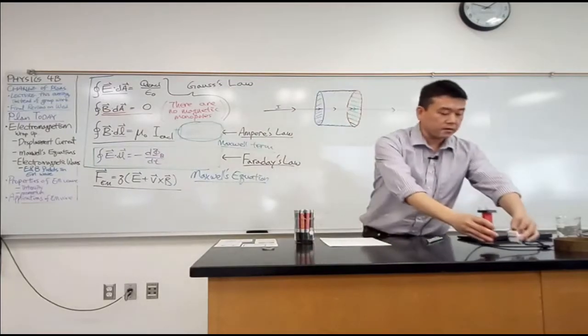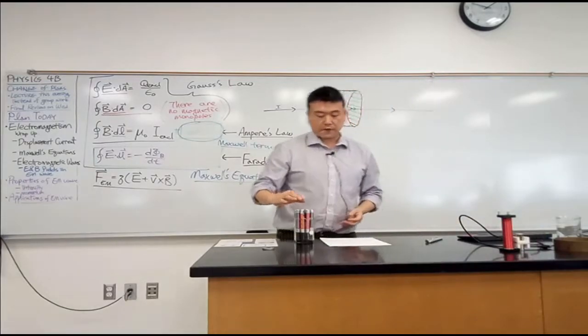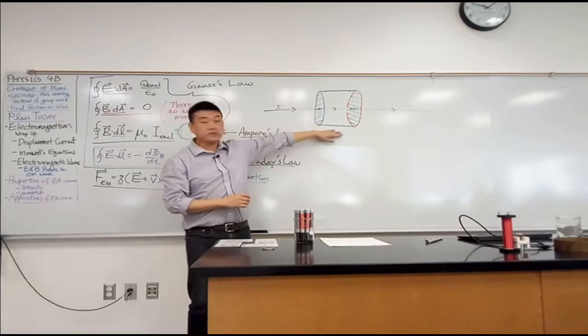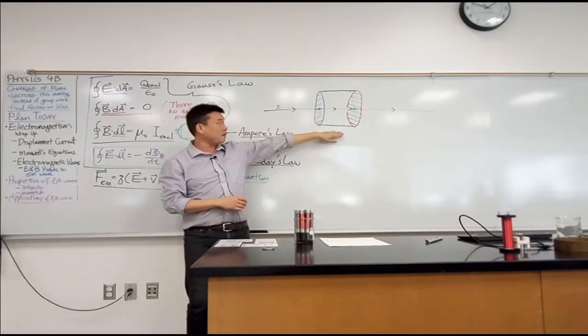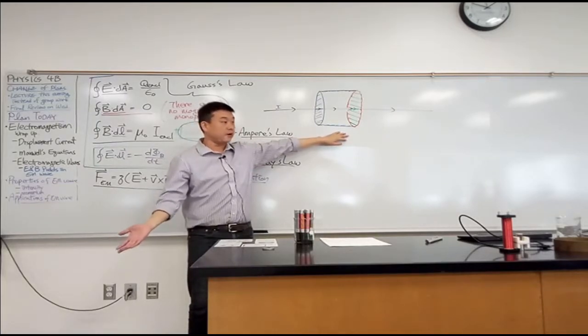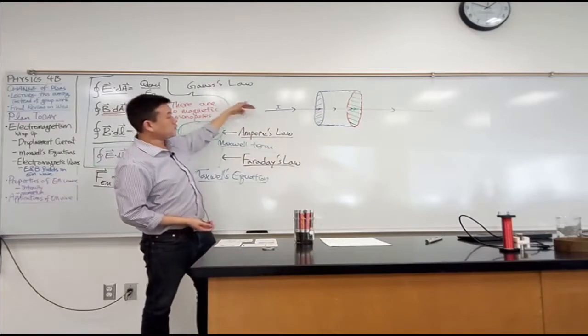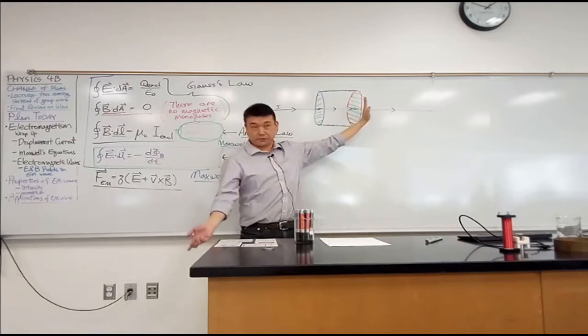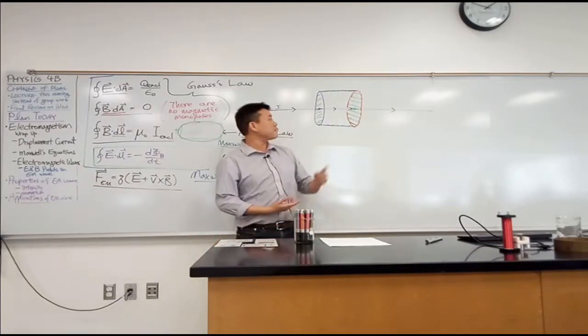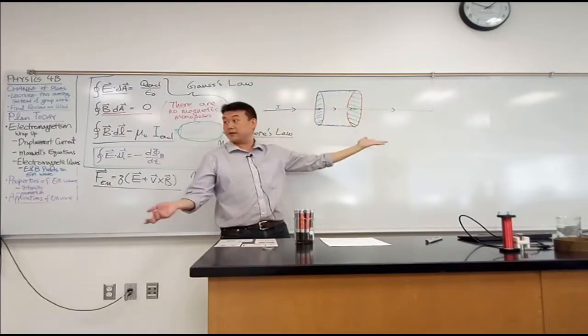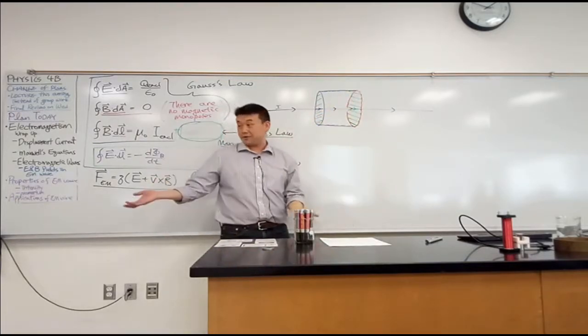So with the Maxwell term, this is the physical situation that Maxwell considered that allowed Maxwell to realize that there is a missing term in our laws of nature. So you have a current flowing, and this ambiguity in the surface is actually important. Now let me make a small - before we said this ambiguity doesn't matter because the current enclosed is the same either way.